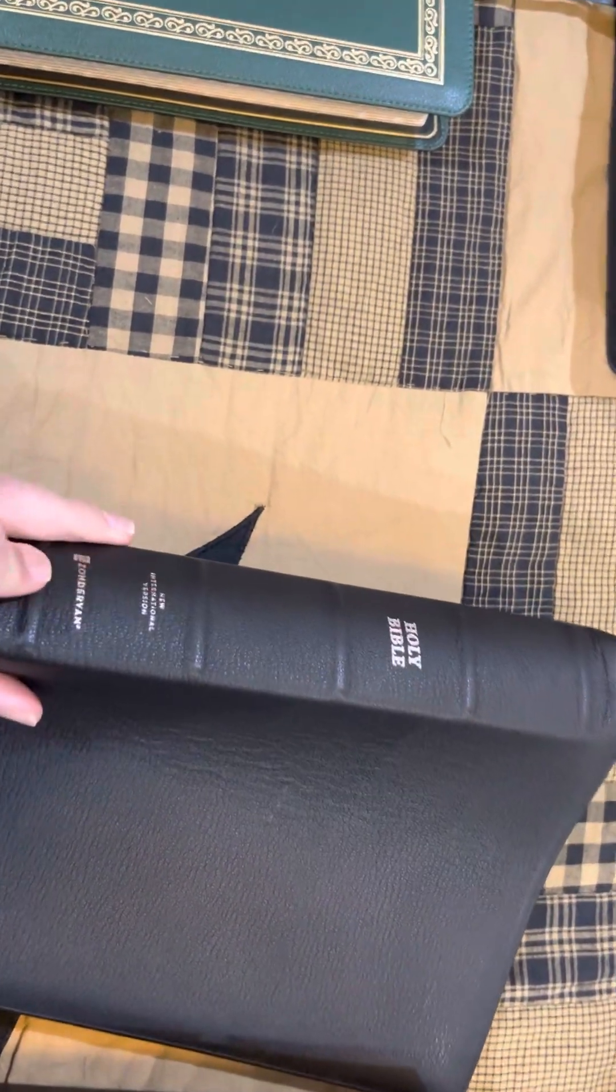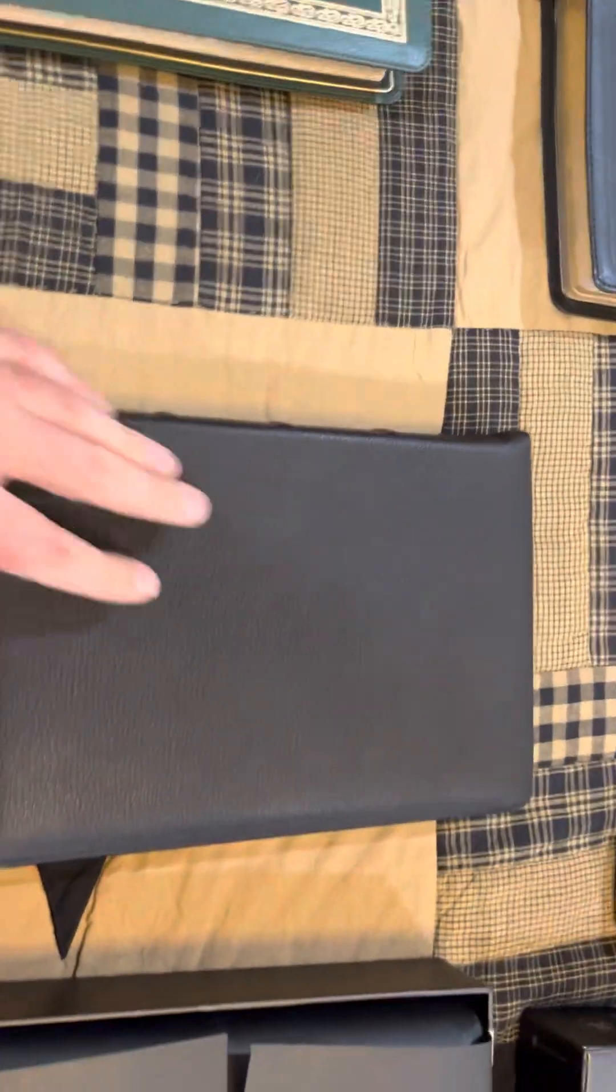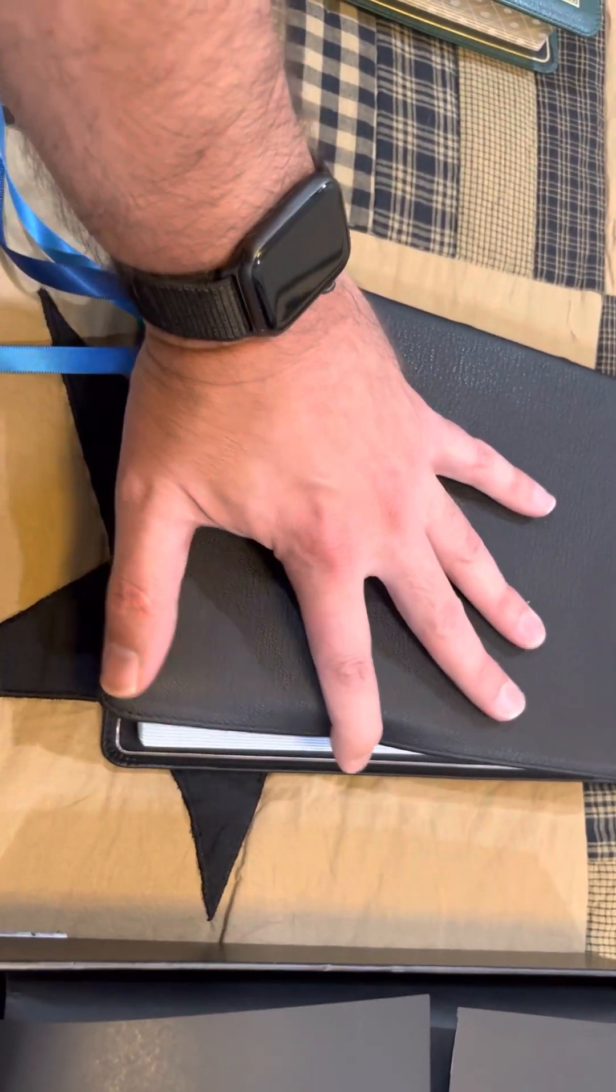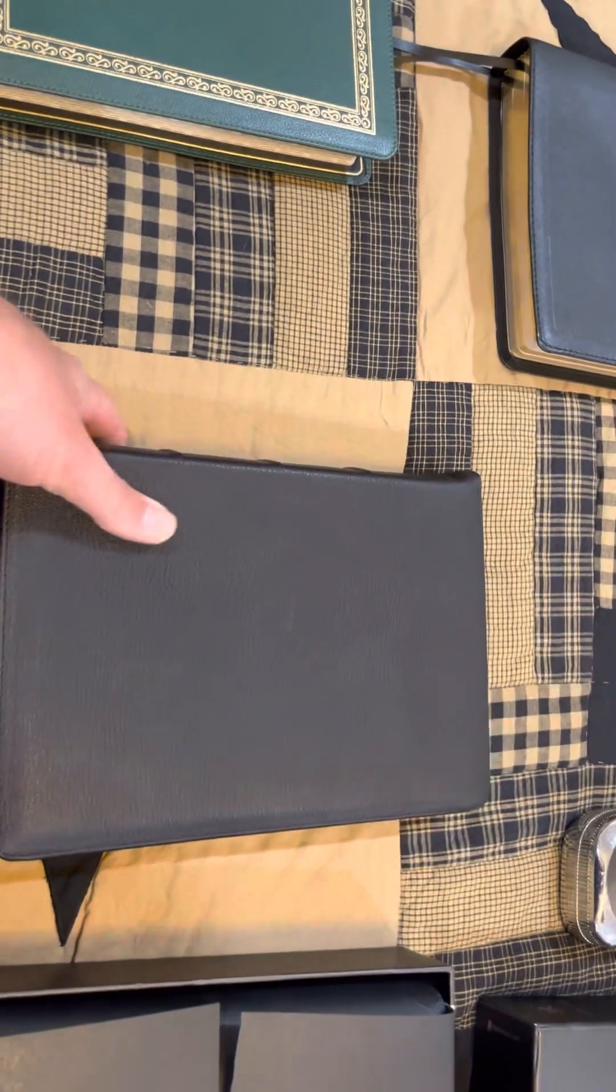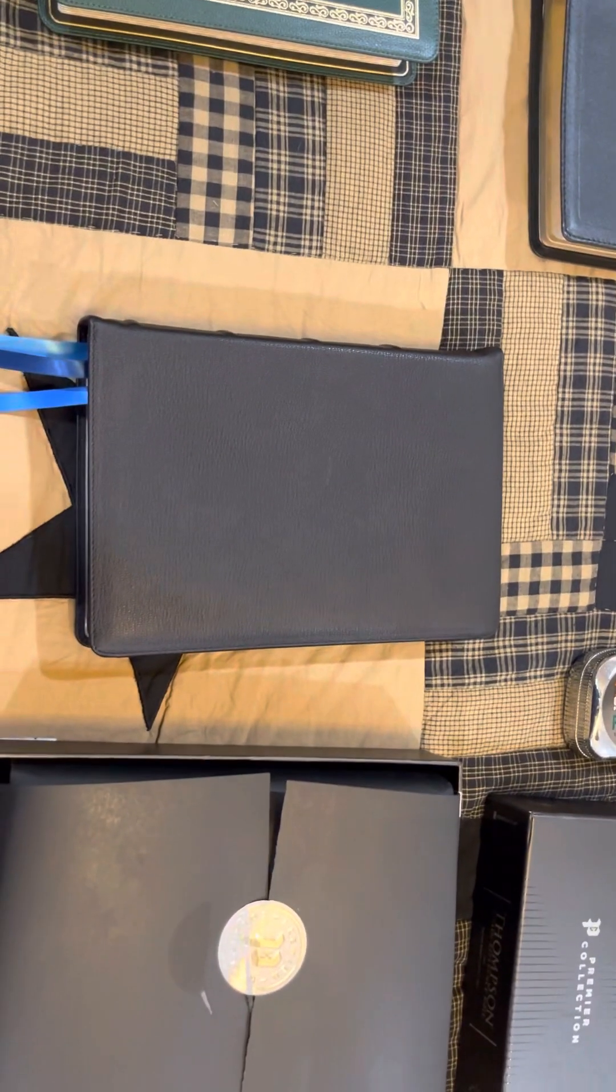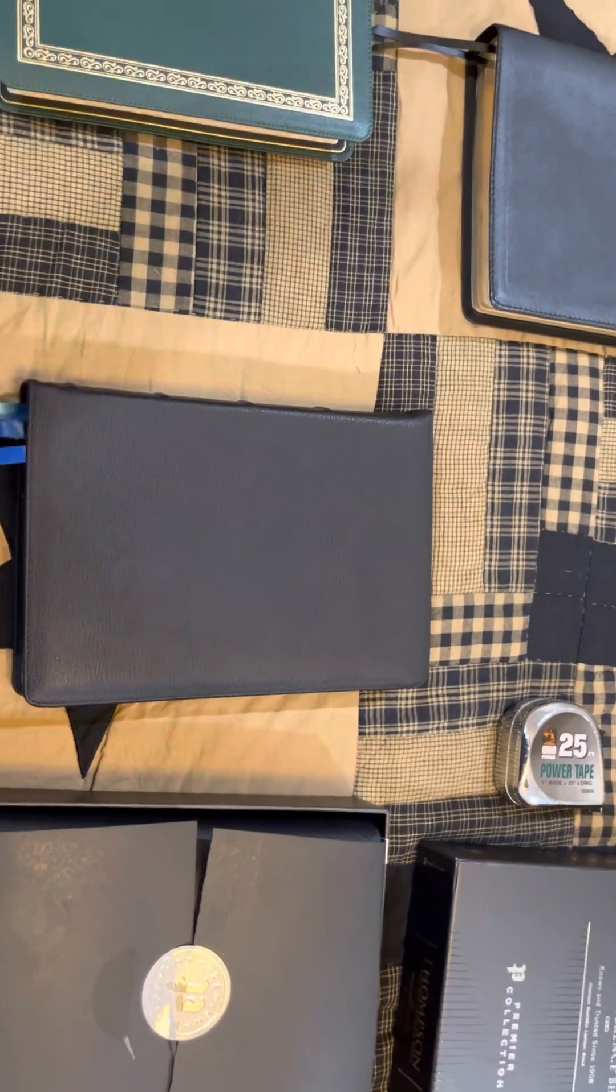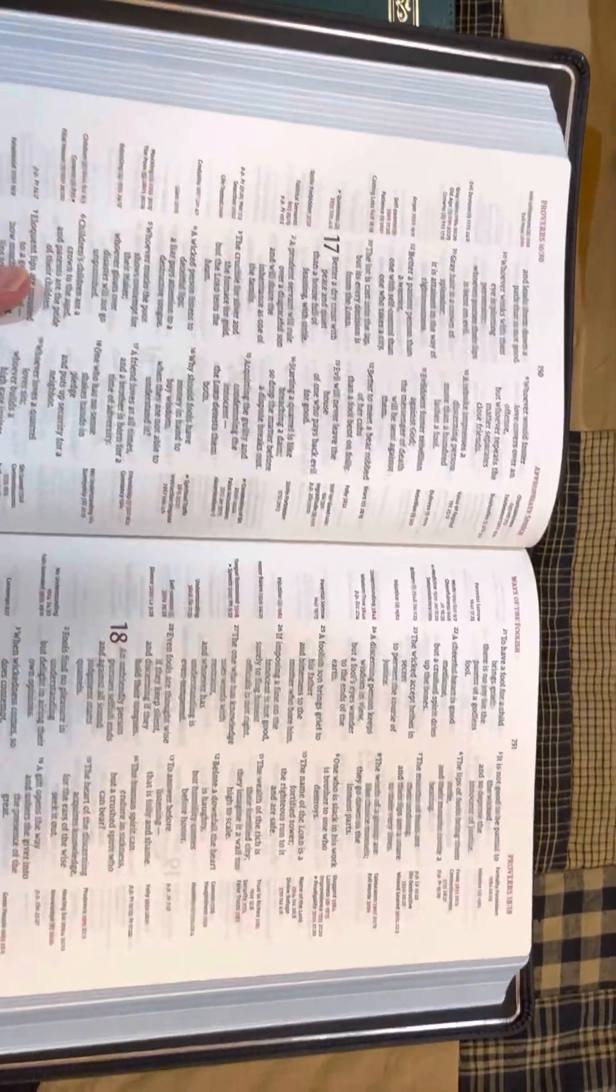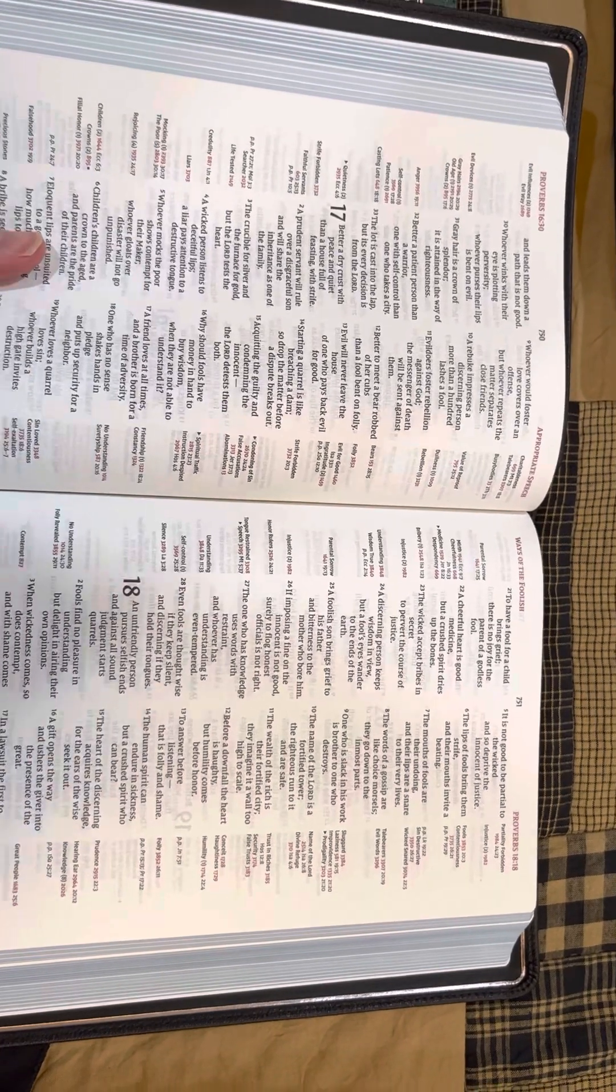But you can see it has really nice spine hubs, 1, 2, 3, 4, 5 of them. And just look at how this Bible is flexible already from the start. It really reminds me of that NIV heritage that's probably my favorite go-to Bible. Look at the amazing 36 GSM paper.